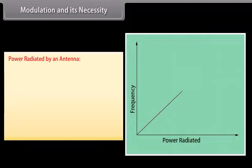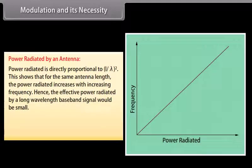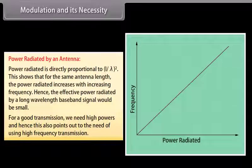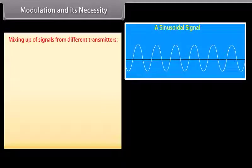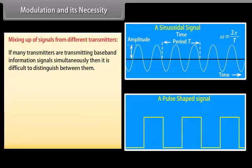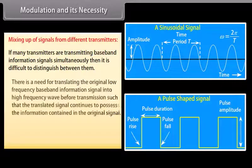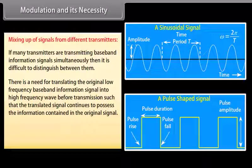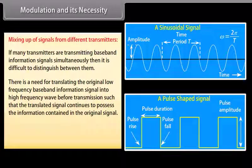Therefore, there is a need to translate the information contained in the original low-frequency baseband signal into high frequencies before transmission. Power radiated by an antenna: power radiated is directly proportional to (L/λ)². This shows that for the same antenna length, the power radiated increases with increasing frequency. Hence, the effective power radiated by a long-wavelength baseband signal would be small. For good transmission, we need high powers, and this also points to the need for high-frequency transmission.